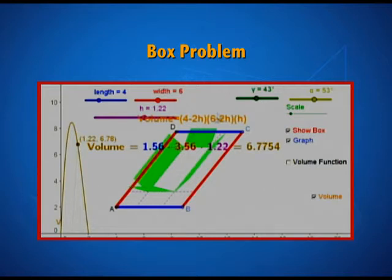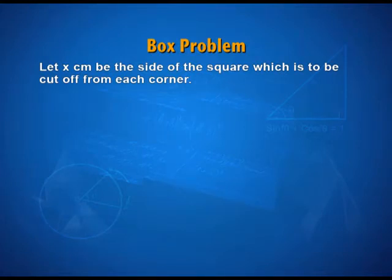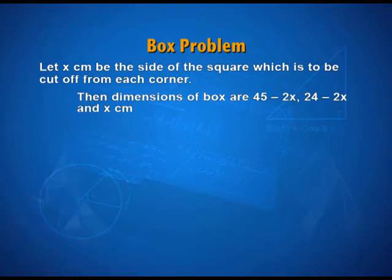This is what we need to do algebraically: get the volume function and then maximize it using the first or second derivative test. Starting with an understanding of what you have and what you do not — we want to cut off squares from the corner and we do not know the dimension of that square. So let x cm be the side of the square to be cut off from each corner. The dimensions of the box are then (45 − 2x), (24 − 2x), and x cm, because from both sides a square of x units has been cut off — so 2x units are removed from length and breadth, and the height equals x.